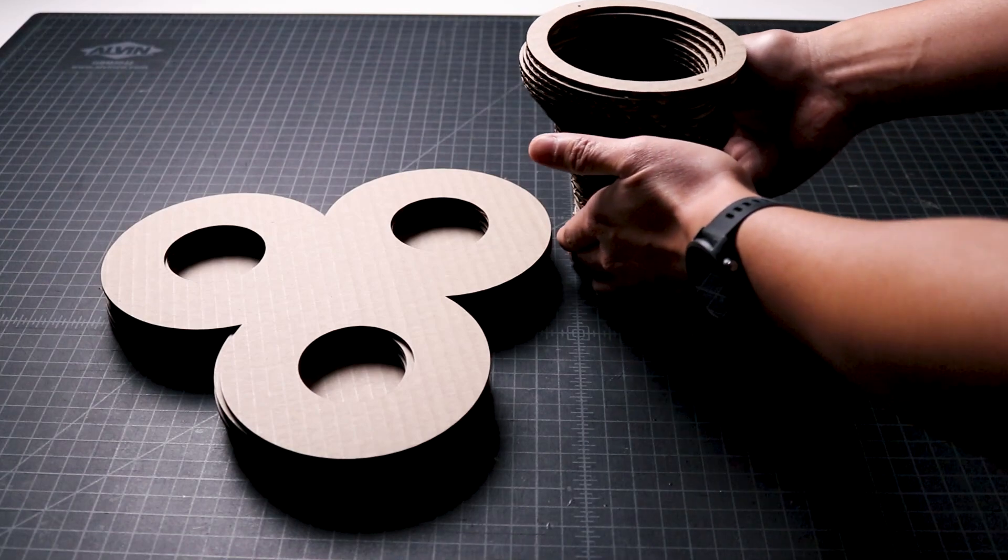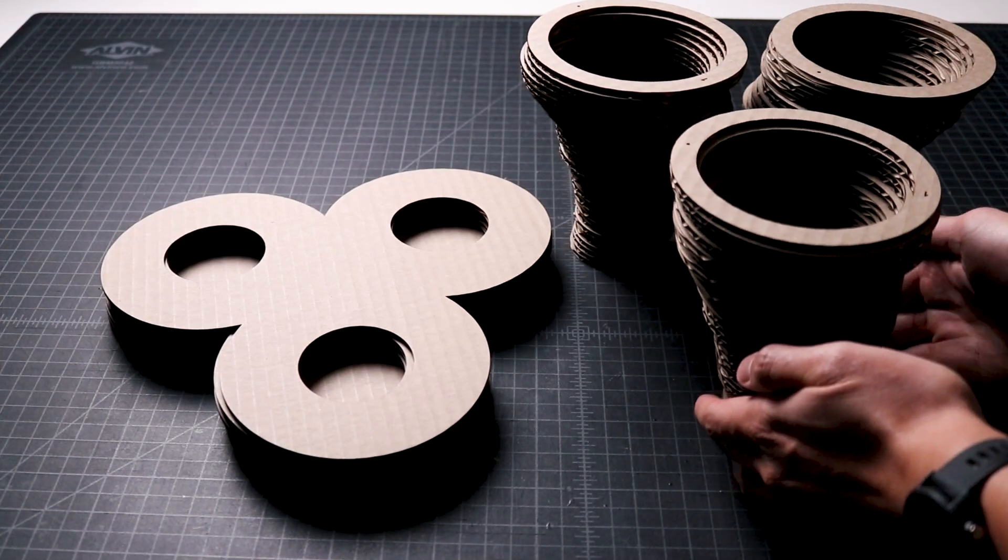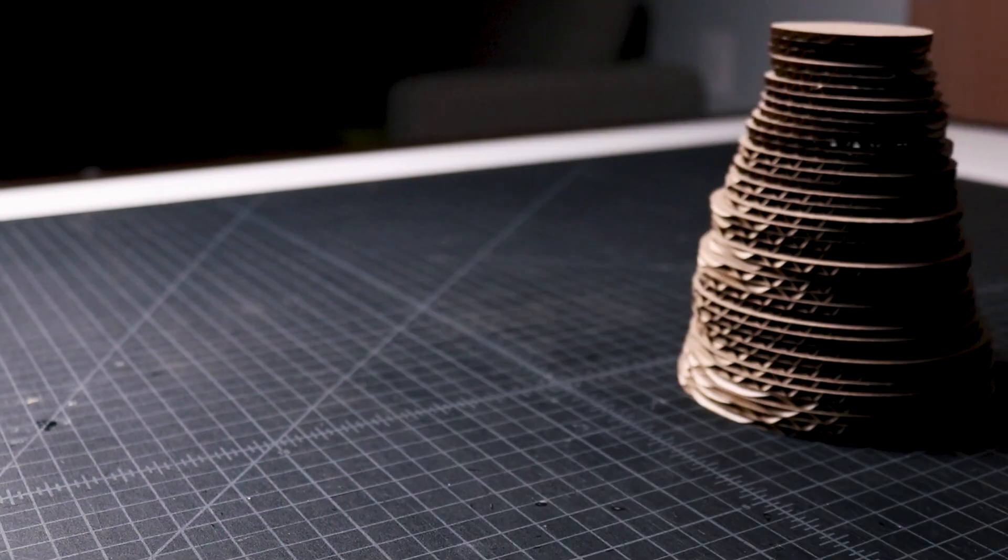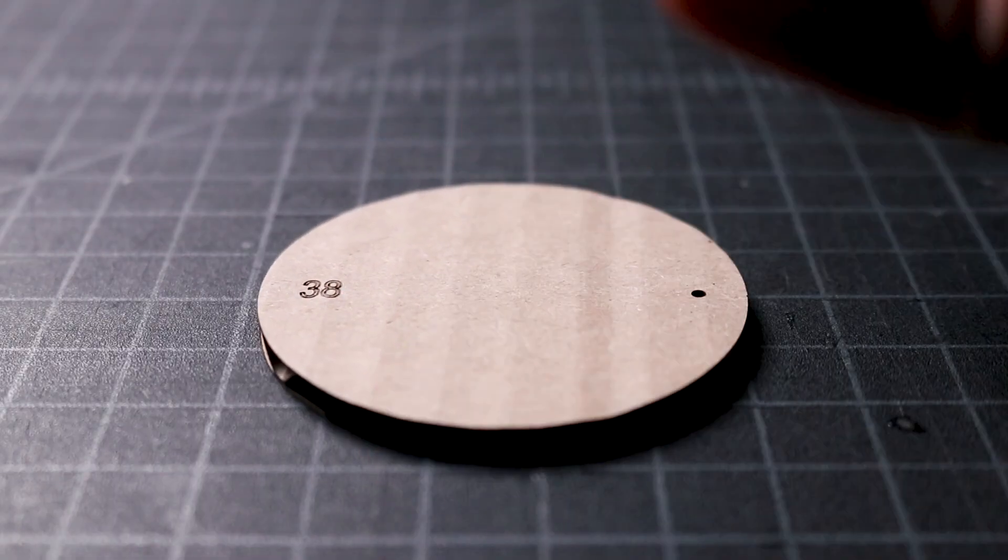Once the pieces were cut, I brought them over to my work table with all the pieces neatly organized and stacked. Then I turn over one of the cone light stacks so that the larger pieces are at the bottom and the smaller ones are at the top.